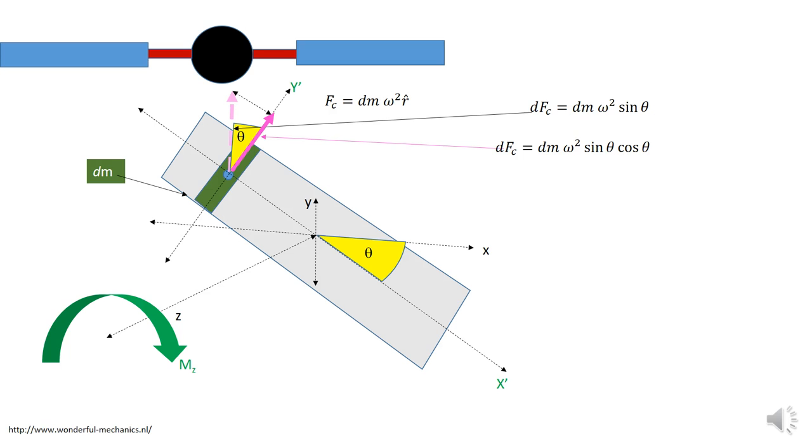So we're looking at the moment now. So the moment is this force times the distance. And let this distance be, you know, small value of dx or dx prime, because we're on the x prime axis. So the moment will be dm omega squared sine theta cosine theta dx prime.